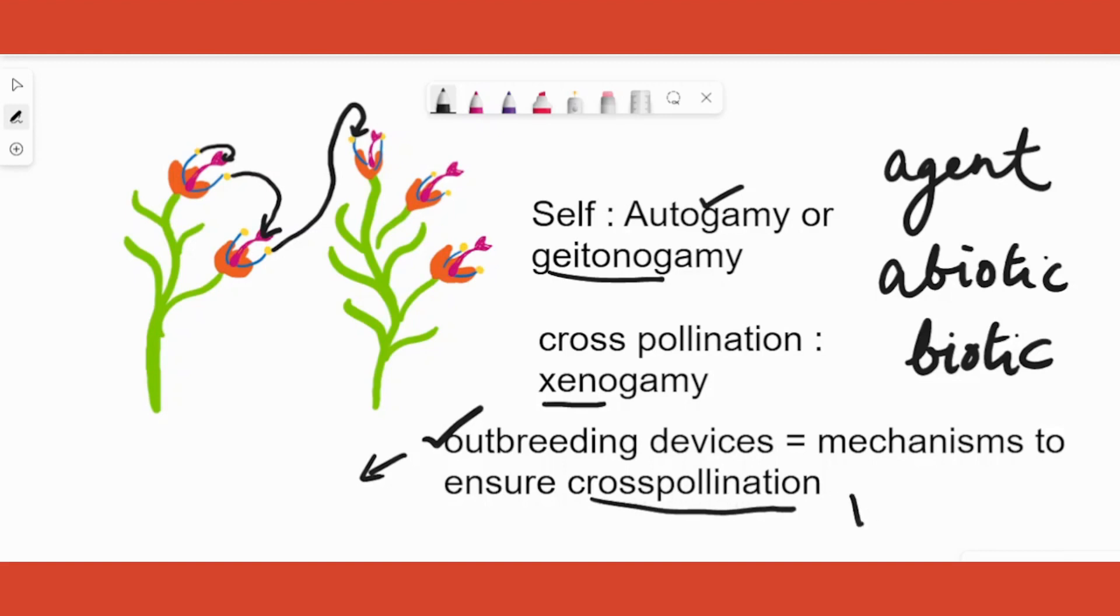One is you get variation. Another is better varieties are produced due to cross pollination. Because of these two reasons, plants would prefer cross pollination. To ensure cross pollination, what are the mechanisms that nature has brought about? Those are called outbreeding devices.